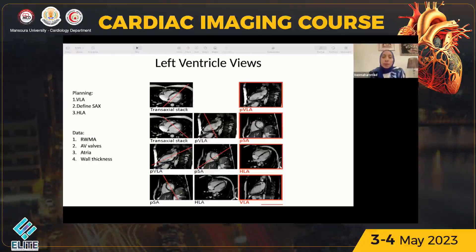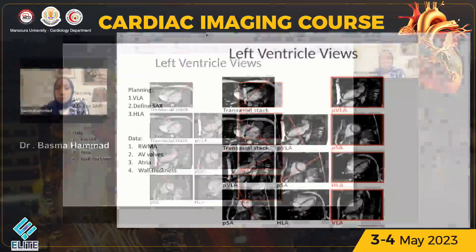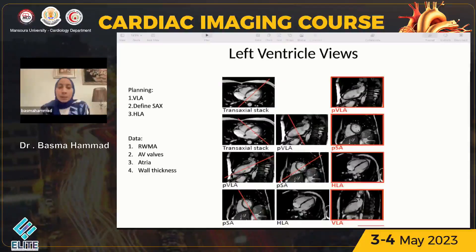By doing a plane bisecting the mitral valve into the apex from the vertical long axis, and a plane bisecting the short axis, we will have the four-chamber view — the proper one, not foreshortened — equivalent to the four-chamber view in echo. And then if we would like a more proper two-chamber view or vertical long axis, we can plan it from the short axis image, bisecting it vertically, and we will have the four-chamber and two-chamber views. This planning gives us equivalent chamber views and short axis.